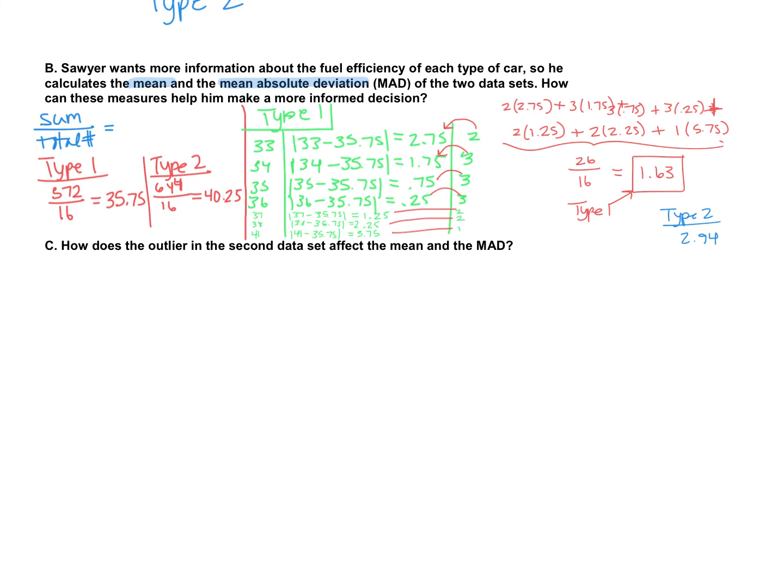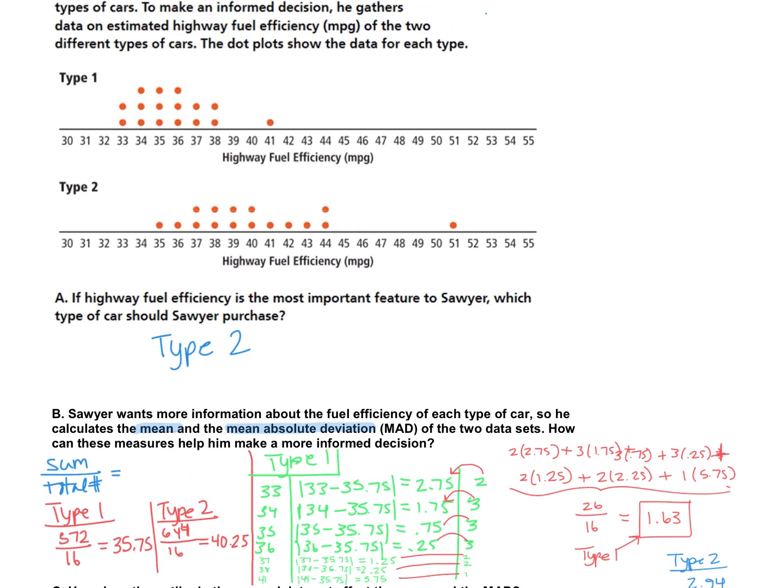So last question: How does the outlier in the second data set affect the mean and the MAD, the mean absolute deviation? So if we look at the data set, type 2 had a more extreme outlier. This 51 was significantly higher than the other ones. This 41, I said it was a bit of an outlier. It's just a little bit higher. So hopefully we can see that 51 is a true outlier.